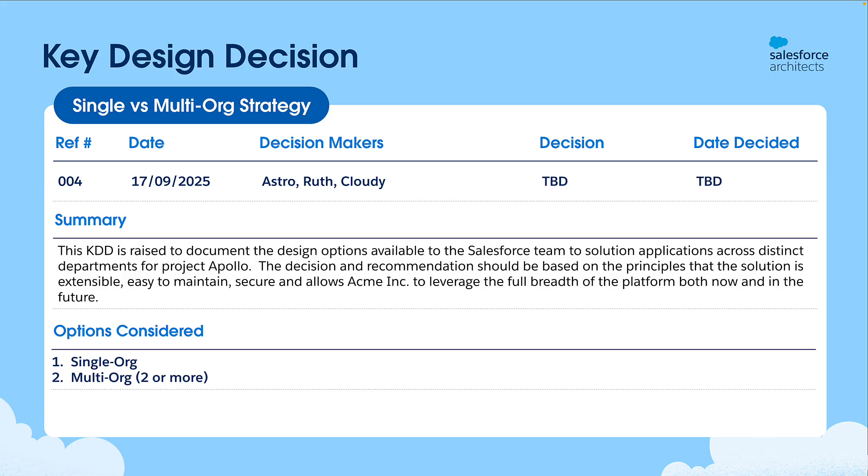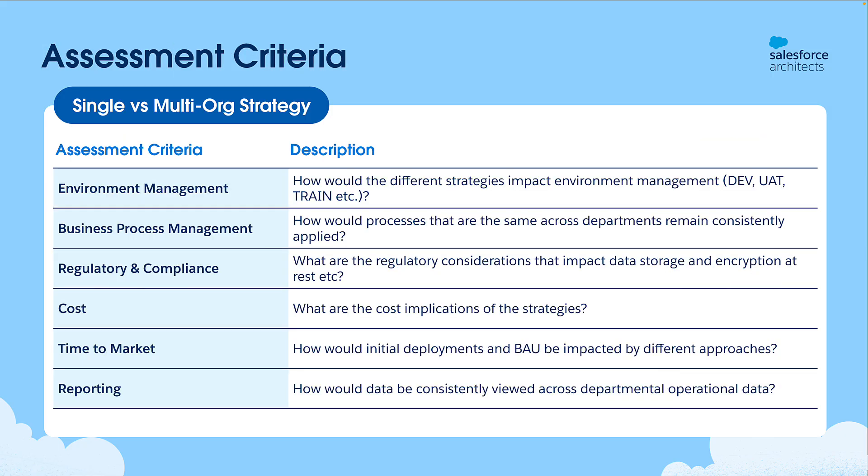Now to make a decision, I recommend researching assessment criteria. These are what we'll use in a side-by-side comparison of a single versus multi-org strategy, and I've shown a few examples here of how you might start to do this. This is an iterative process that requires the input of the wider enterprise architects, developers, and administrators to create a comprehensive list. Giving stakeholders the ability to add and modify assessment criteria in this iterative process is key to making sure that the final decision you make is well balanced and widely accepted.